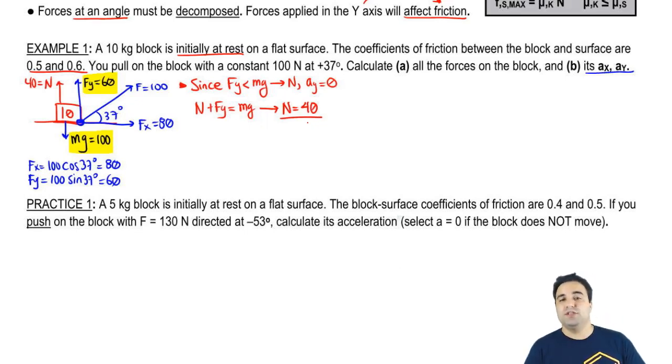There's a coefficient of friction, so this is a rough surface, and there's a normal. Remember, friction is μ times normal, so I have a μ and I have a normal, so I have friction. And if I'm pulling to the right, friction will oppose that attempt to move the box to the right, and it will oppose it to the left here with friction.